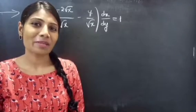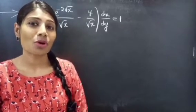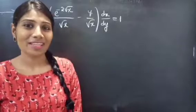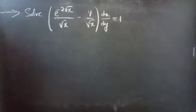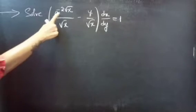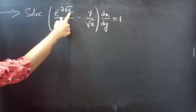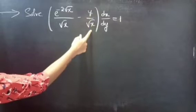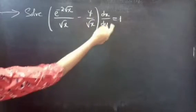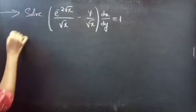Hello everyone, this is Zay Karpina. In this video we are going to solve the given differential equation. The problem is: solve e^(−2√x) / √x − y / √x times dx/dy equals to y.